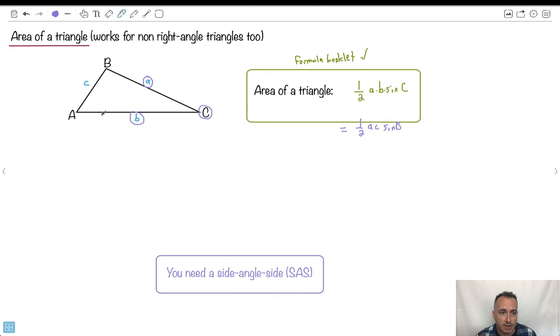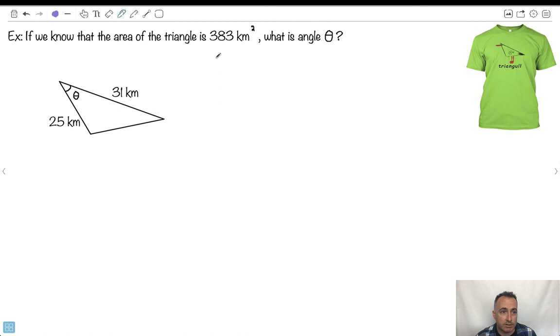So c a b, so it'd be side c sine b, side b, sorry. So one half and it'll be c b sine of that angle a. Just to show you, you could sort of rotate it around. So the important thing is not the letters, it's how it works. So this is actually the important part here, knowing you need a side angle side. So let's do an actual example here.